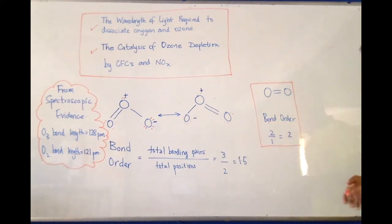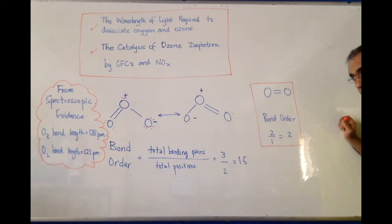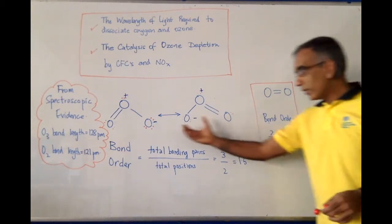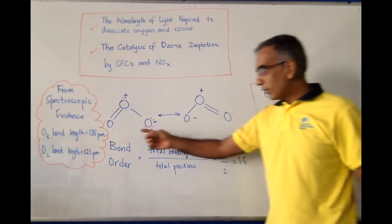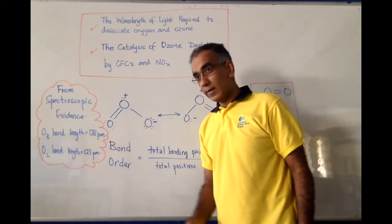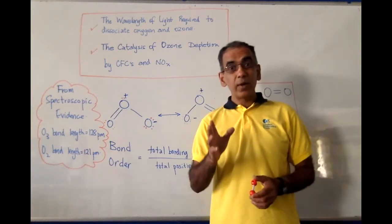as compared to a bond order of 2 for diatomic oxygen. So this difference in bond order correlates to the difference in bond length.